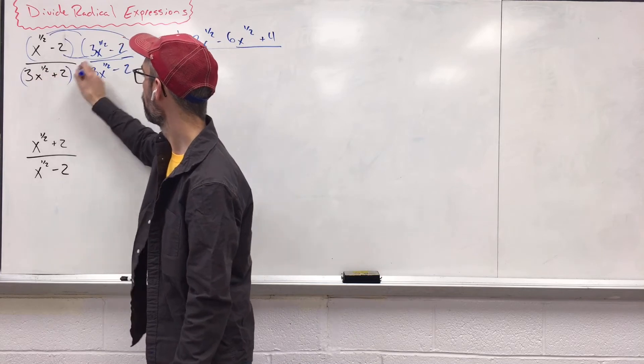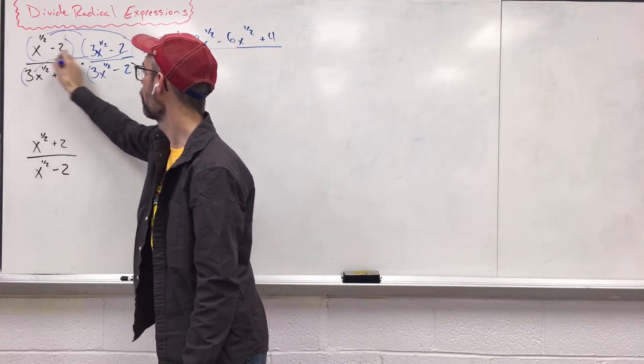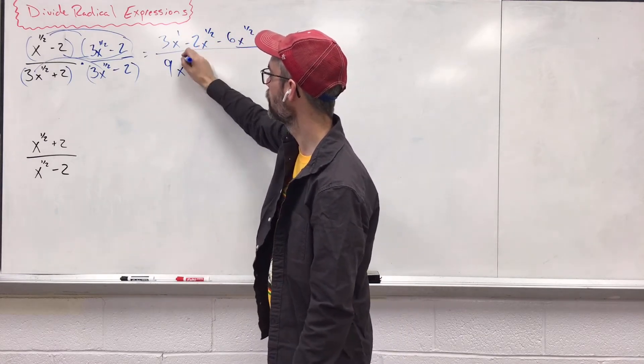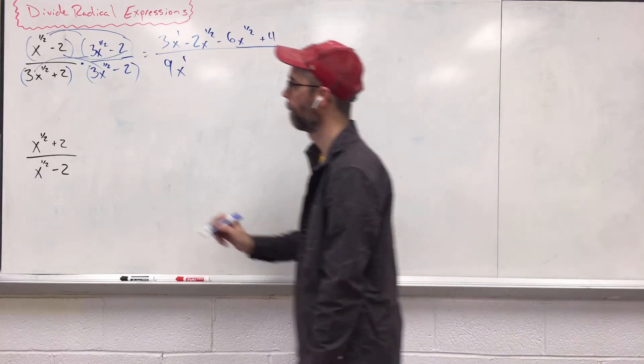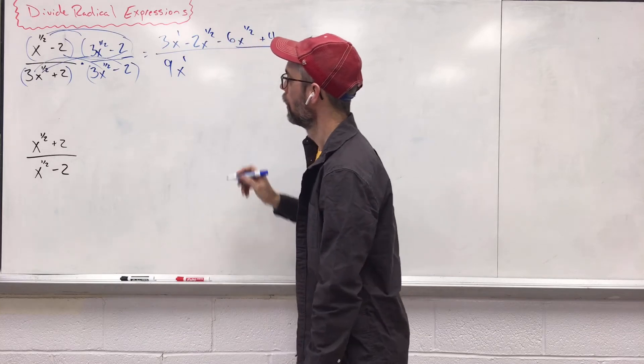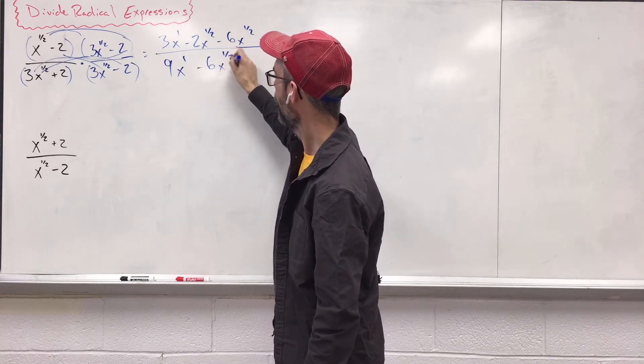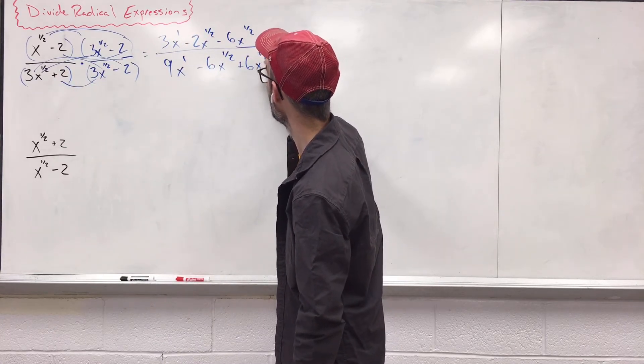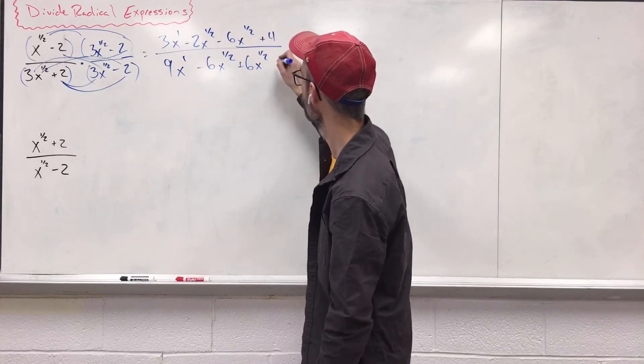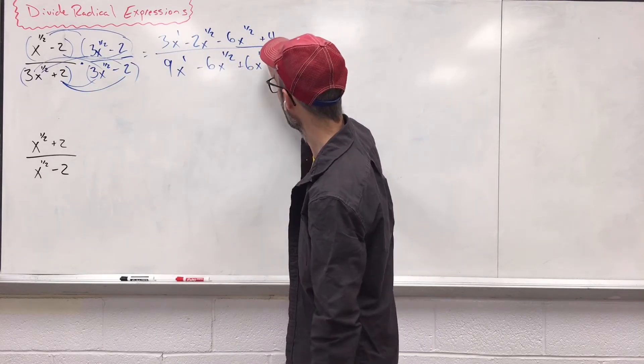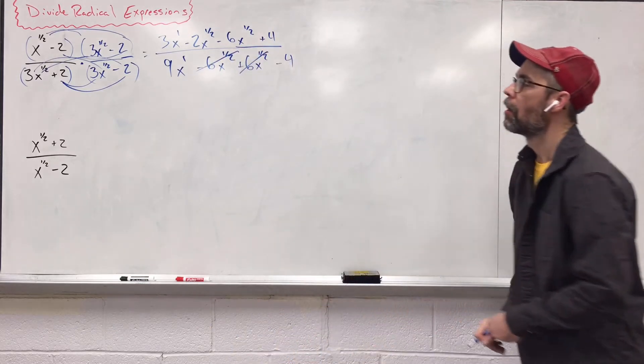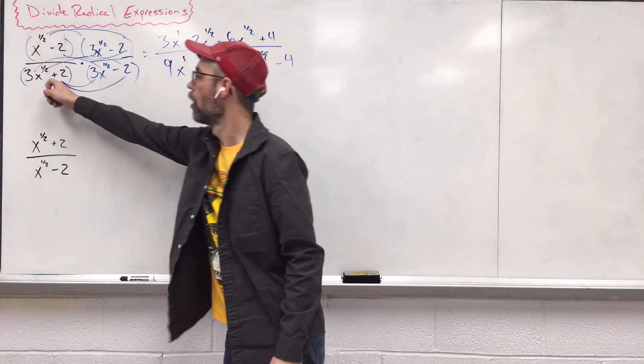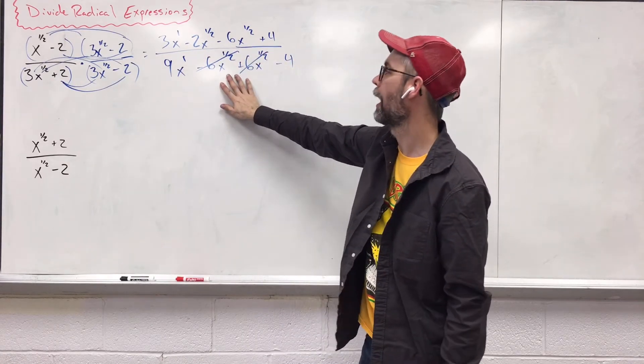Let's do the same on the bottom. Let's distribute down here. So, we'll start off with these. 3 and 3 gives us 9. x to the one-half, x to the one-half, add the exponents. One-half, one-half gives us 1. Negative 6x to the one-half. Distribute the 2 now. Positive 6x to the one-half. Now, why do we do these conjugates? We do the conjugates for that to happen. The fraction exponents disappear here. That's our goal. That's what we wanted to happen. So, plus minus helps this part to happen.